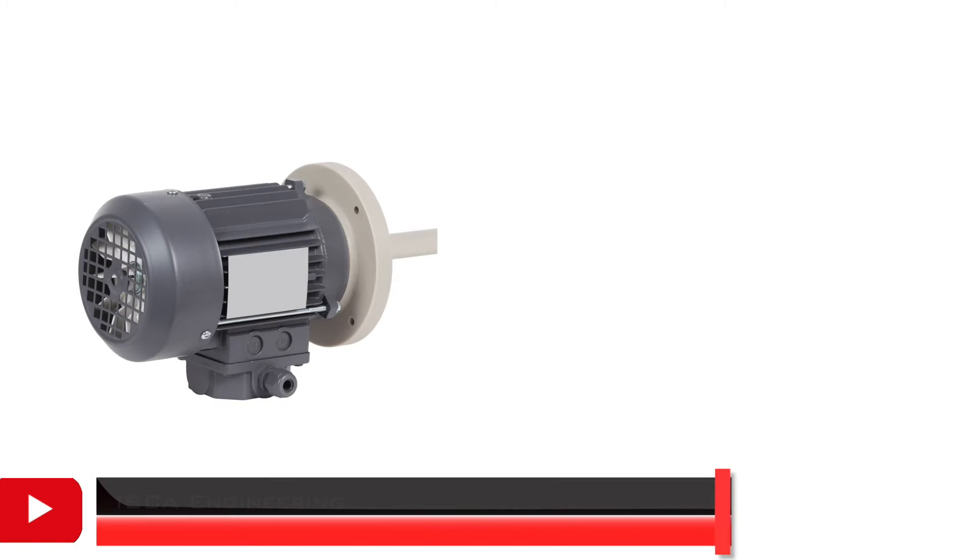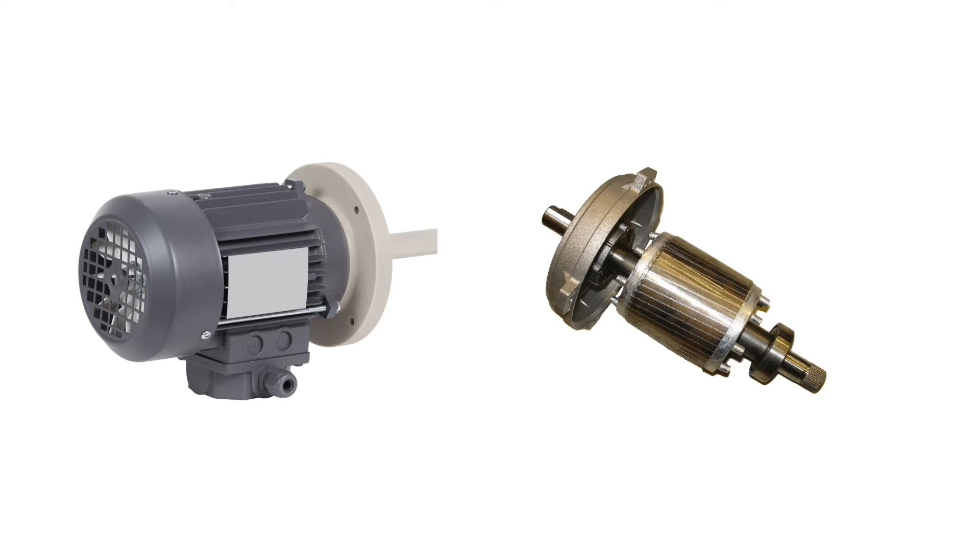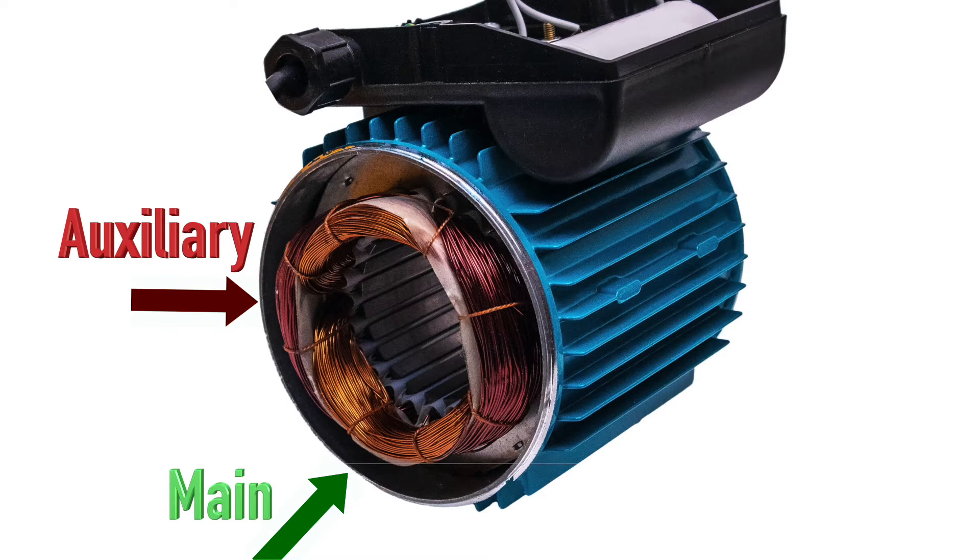The split phase motor uses a squirrel cage rotor that is identical to that in a 3 phase motor. They consist of two windings, one being the main winding, and the other one being the auxiliary start winding, which is displaced in the stator 90 mechanical degrees from the main winding.